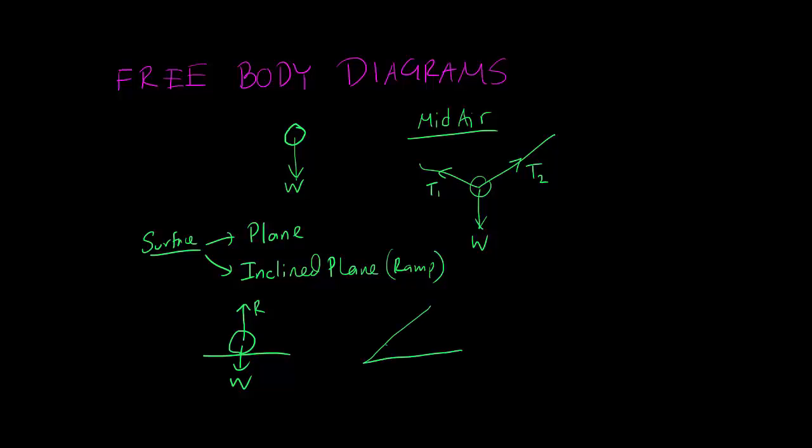So if it was an inclined plane, then the weight would still be vertical but the reaction force, since it is perpendicular to the surface, would be drawn like this in the free body diagram. Now when we have planes, the plane can either be a smooth plane or a rough plane.